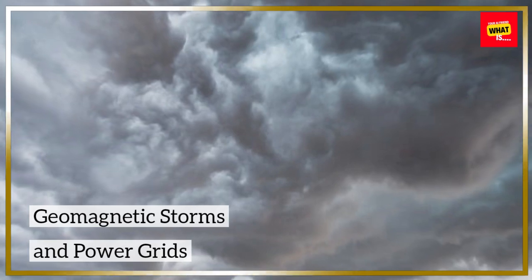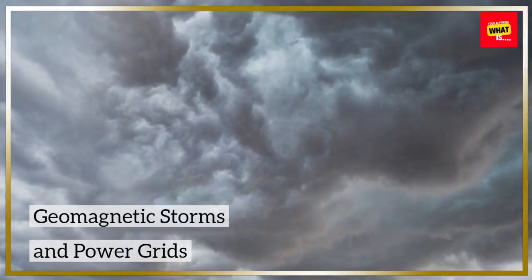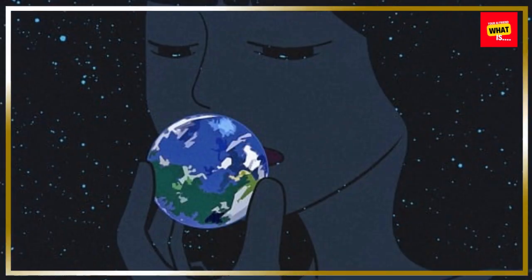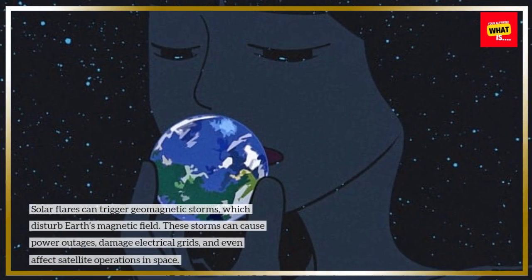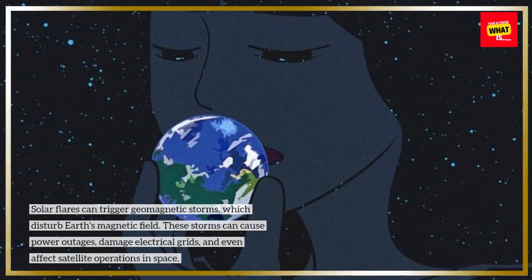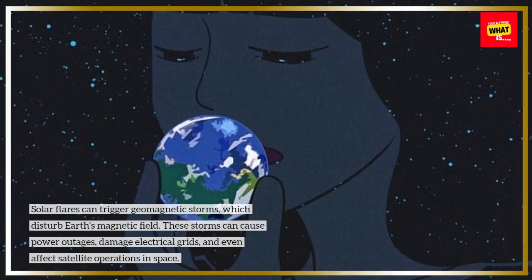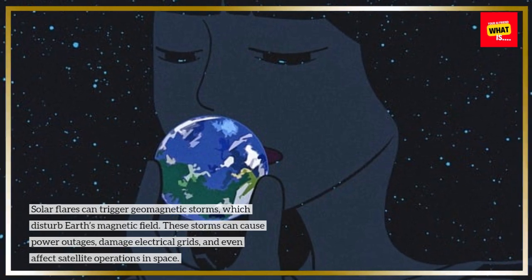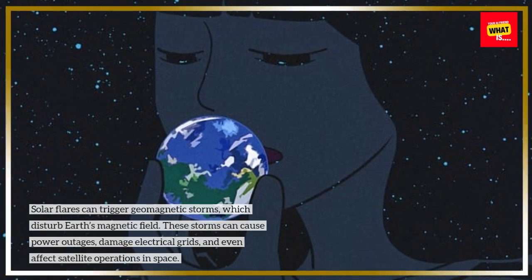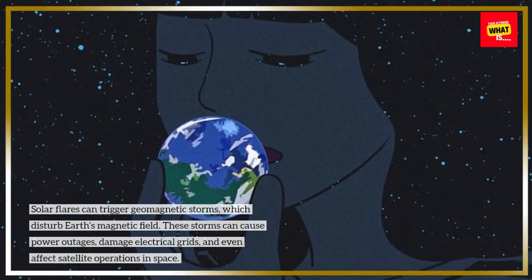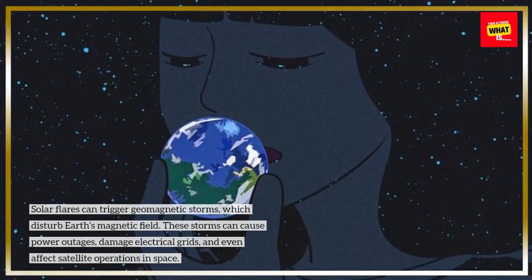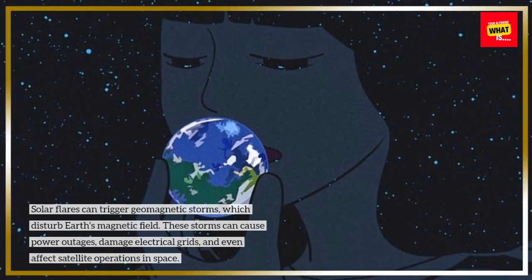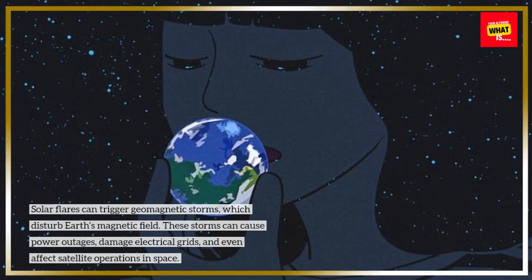Geomagnetic storms and power grids. Solar flares can trigger geomagnetic storms, which disturb Earth's magnetic field. These storms can cause power outages, damage electrical grids, and even affect satellite operations in space.